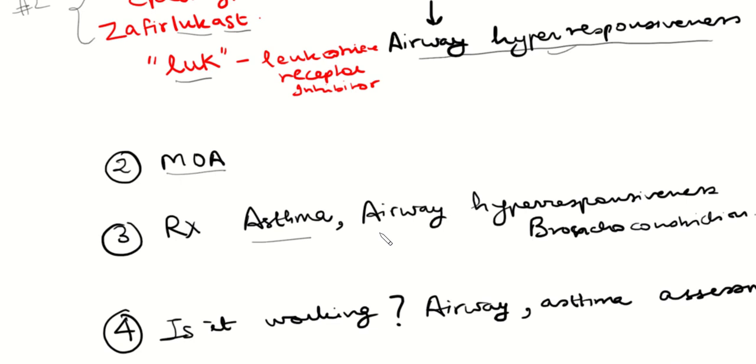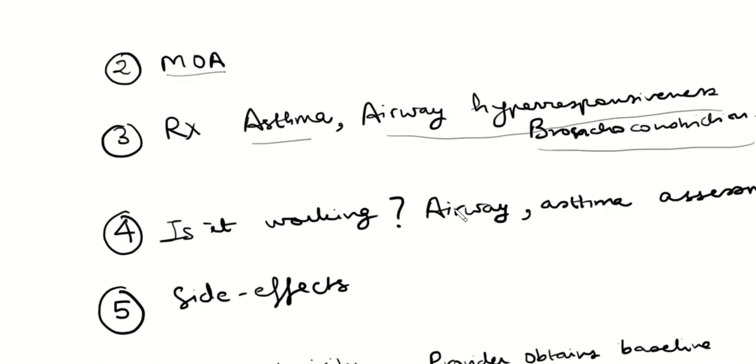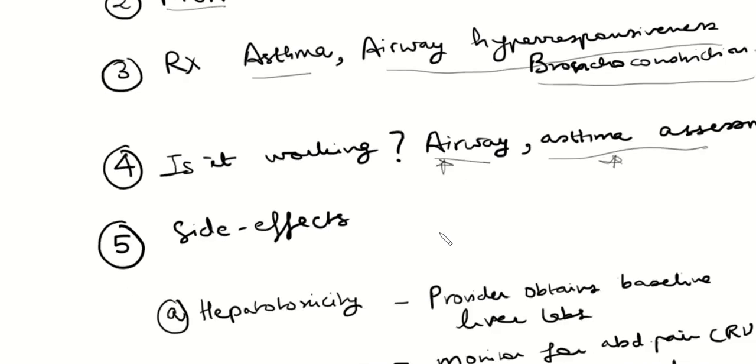What do these drugs use for? Asthma. Airway hyperresponsiveness diseases where there's bronchoconstriction. Is it working? Airway assessment. I don't hear wheezing anymore. Asthma assessment. The peak expiratory flow meter is much better. Patient doesn't have acute attacks anymore. So that would give me an idea of how the asthma is doing.